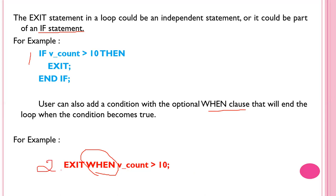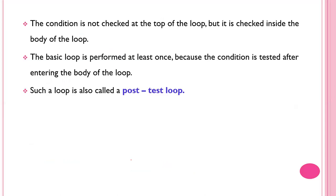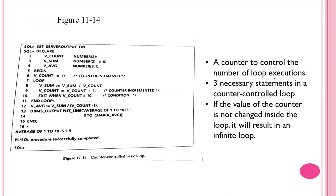The condition is not checked at the top of the loop but is checked inside the body of the loop. The basic loop is performed at least once because the condition is tested inside the body of the loop. This kind of loop is called a post-test loop. This is an example of a counter-controlled basic loop.